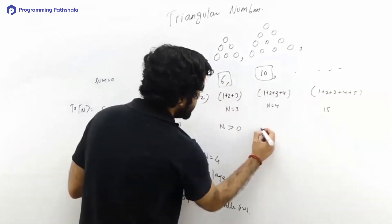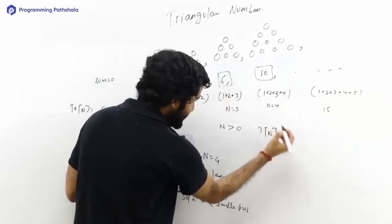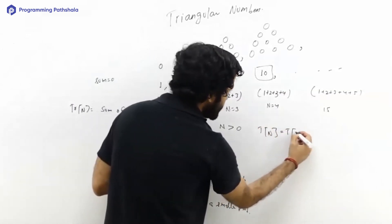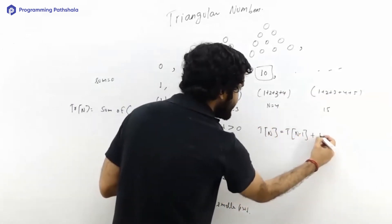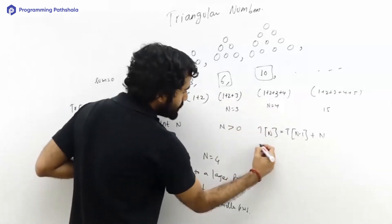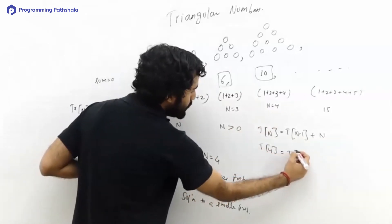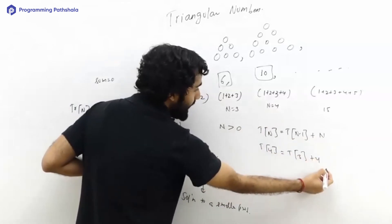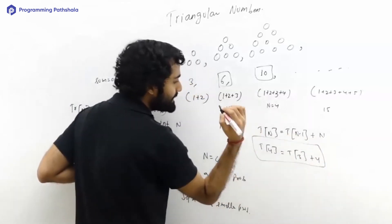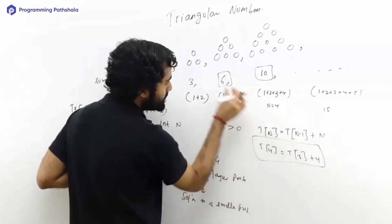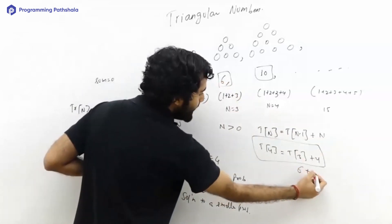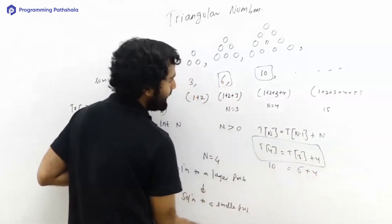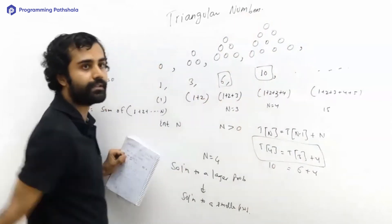You can see that happening over here. T of n, which is your nth triangular number, can be written as T of n minus one plus n. If you substitute n equals four, you will see T4 equals T3 plus four. And what does this mean? This simply means that in your third triangular number, which is six, you just add four and that is how you get 10, which is your next triangular number.